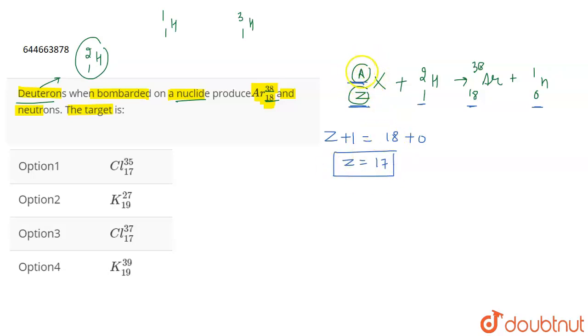Now, we have to find out the value of A which will be the mass number. So, this will be A plus 2. A plus 2 equals 38 plus 1. This will be equal to A equals 39 minus 2. 39 minus 2 means 37.